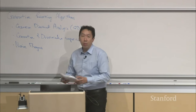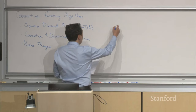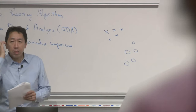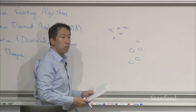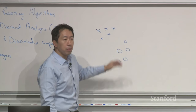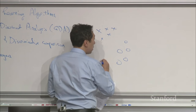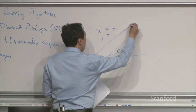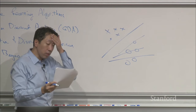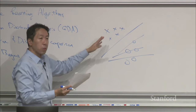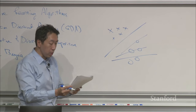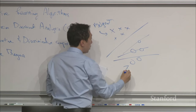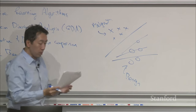We'll use binary classification as the motivating example for today. If you have a dataset that looks like this with two classes, then what a discriminative learning algorithm like logistic regression would do is use gradient descent to search for a line that separates the positive and negative examples. If you randomly initialize parameters, the decision boundary migrates over the course of gradient descent until you get a line that separates the positive and negative examples.